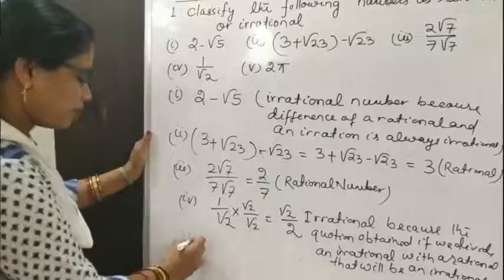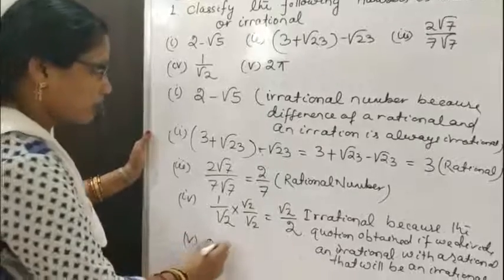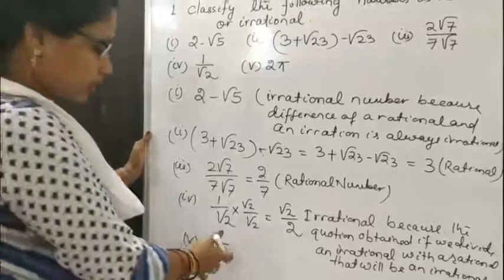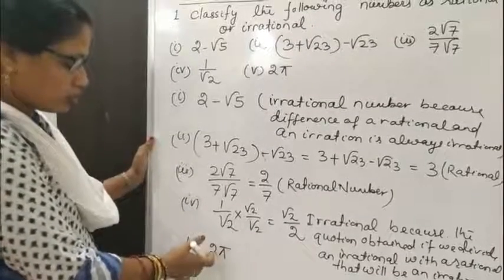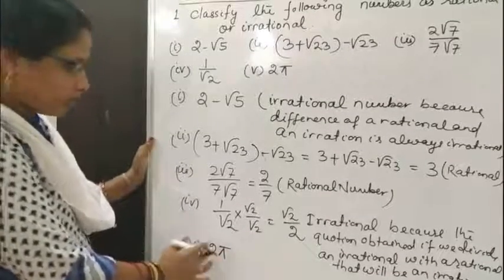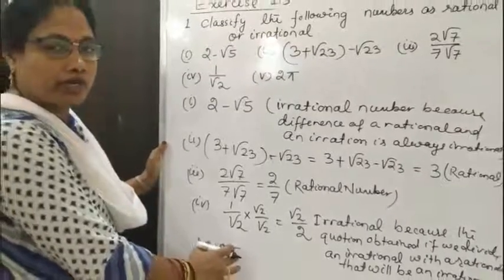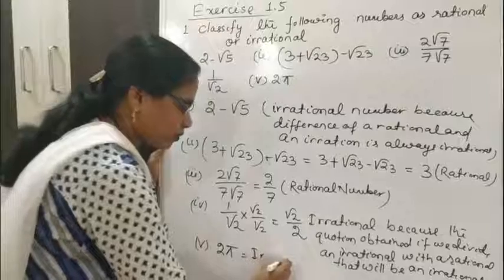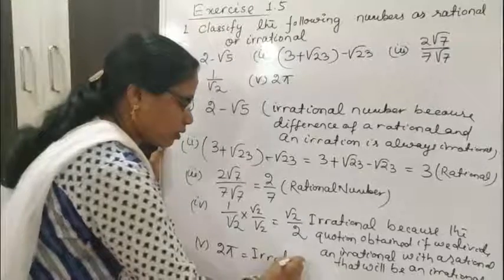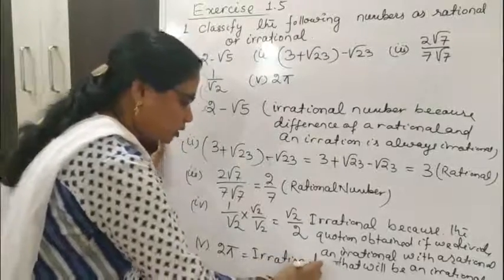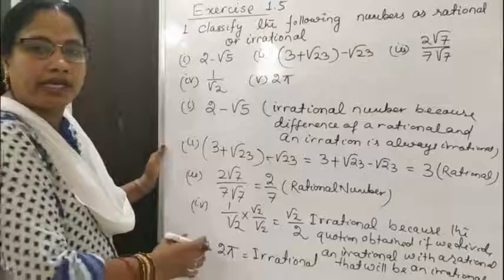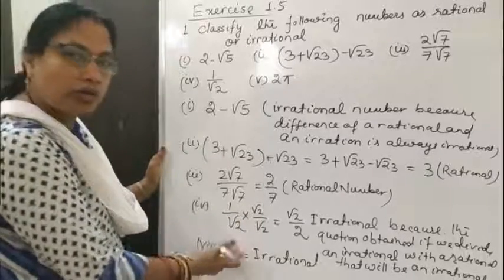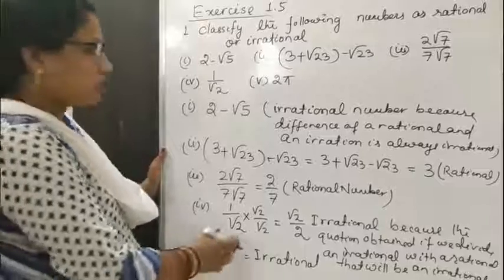Bit 5: 2π. We know π is an irrational number, and 2 is a rational number. A rational number multiplied with an irrational number is always irrational. The decimal representation of π is non-terminating and non-repeating, and when multiplied by 2 it is also non-terminating and non-repeating.